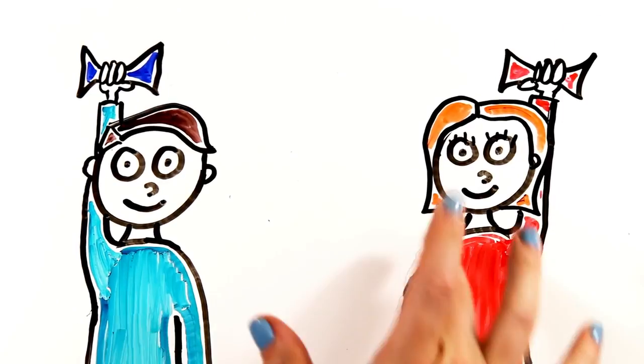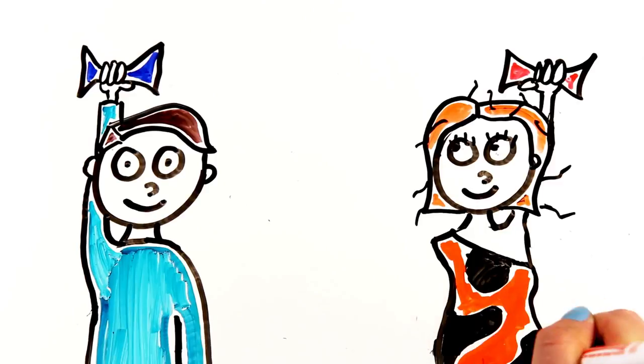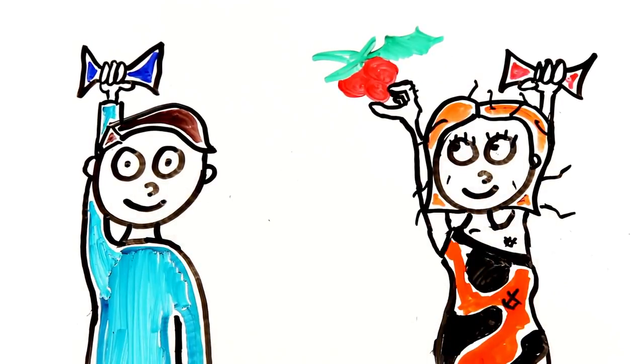Researchers hypothesize this preference has evolved from our hunter-gatherer societies, where women's visual systems were specialized to see ripe red berries against green foliage.